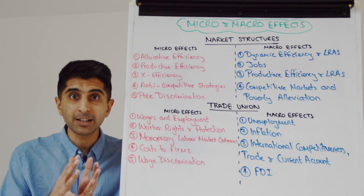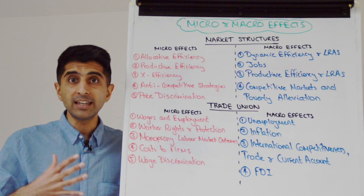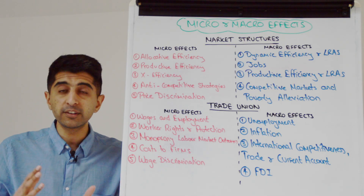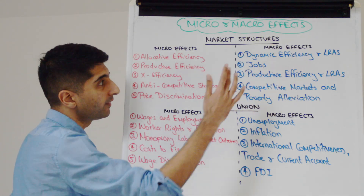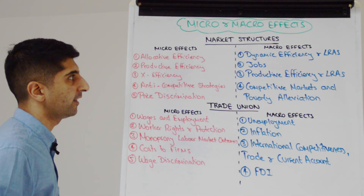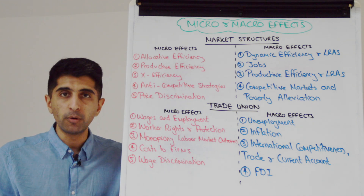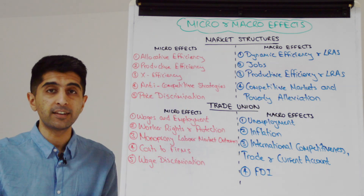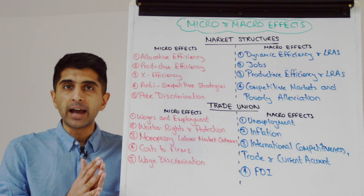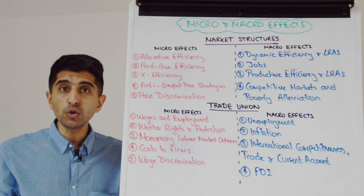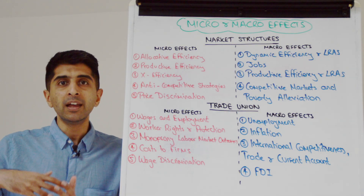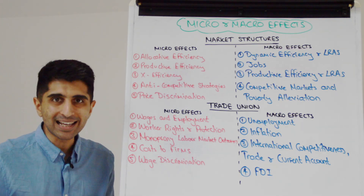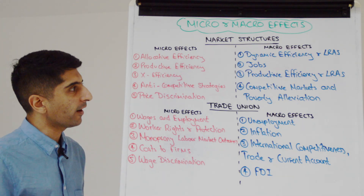We can talk about jobs — how in competitive markets you often see job creation. Labour is a derived demand, and therefore when quantity is high in a competitive market, we see more jobs created. Link that to unemployment and employment as a macro objective. We can also talk about productive efficiency and how in competitive markets we see huge exploitation of economies of scale, which boosts productive efficiency and LRAS.